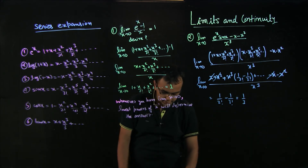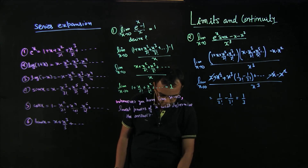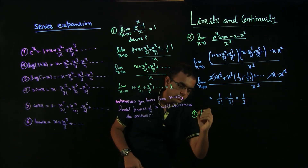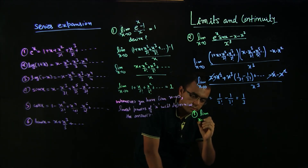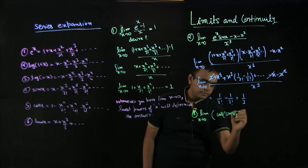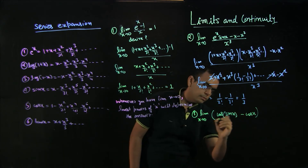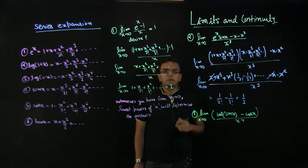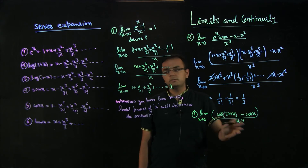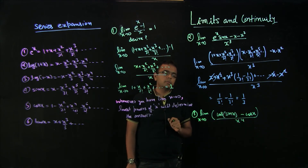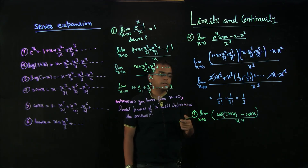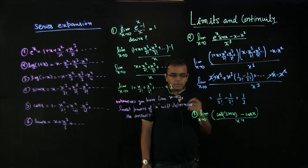Let us do one more problem and then we will close this topic. The next problem is: limit x tends to 0 of (cos(sin x) minus cos x) divided by x⁴. If you put x equals 0 directly, cos(0) minus cos(0) equals 1 minus 1 equals 0, divided by 0. So this is a 0 by 0 type problem, and it is a very classical problem for series expansion. The idea is to retain powers till x⁴.